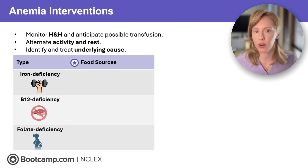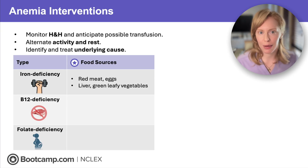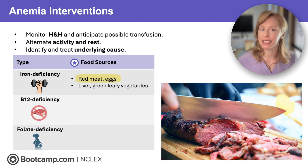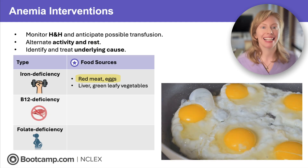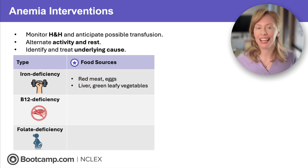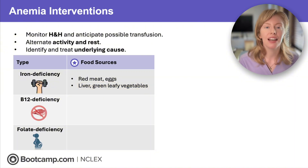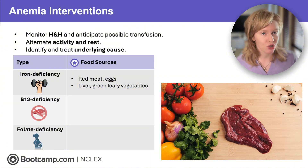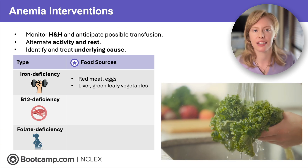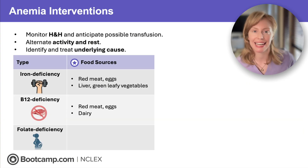For iron deficiency, I like to remember the food sources as 'the blood and the baby' — red meat and eggs. Red meat is red because it contains blood, which is full of iron, and eggs contain iron as building blocks for blood. Iron can also be found in liver and green leafy vegetables, which are very nutrient-dense foods. The liver is the storage organ in the body so it contains a bunch of iron, and green leafy vegetables are a good plant-based source.